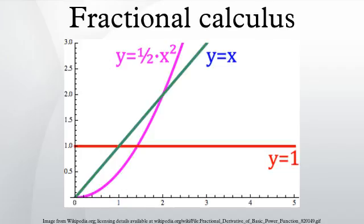The Cauchy formula for repeated integration leads in a straightforward way to a generalization for real n. Using the gamma function to remove the discrete nature of the factorial function gives us a natural candidate for fractional applications of the integral operator.